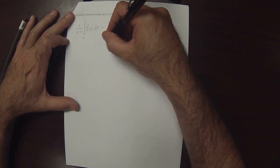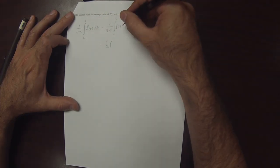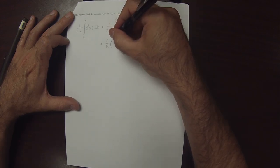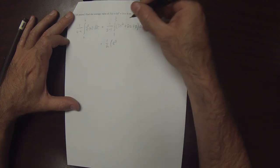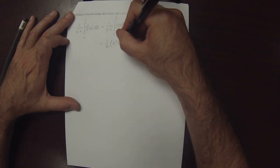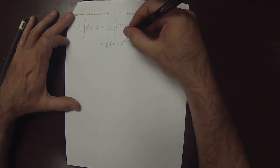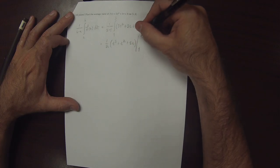So that would be half. And then the antiderivative of this is t cubed plus t squared plus 8t. And then evaluate from 1 to 3.